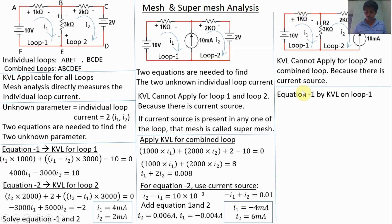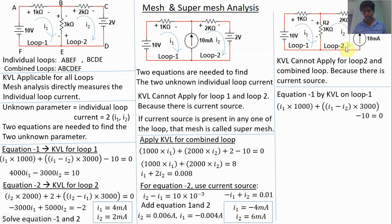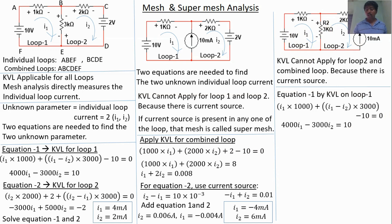Applying KVL on loop 1: the voltage source gives plus, so I1 × 1000 is positive. In the shared branch, I1 flows top to bottom and I2 enters bottom to top, so the branch current is I1 minus I2. Equation 1 simplifies with these voltage terms set equal to 10.